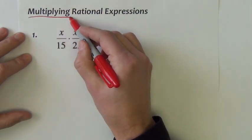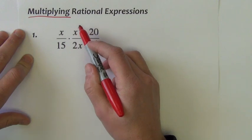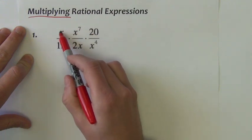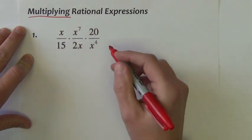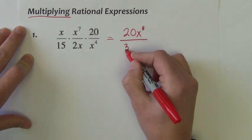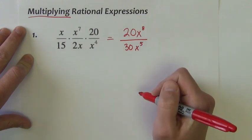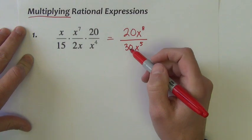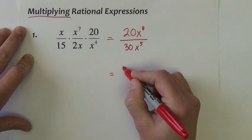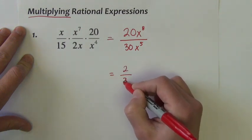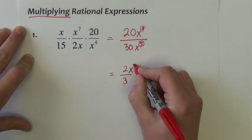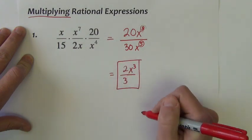Now, how about multiplying rational expressions — multiplying fractions? When you multiply fractions, the rule is you multiply everything on top together and multiply everything on bottom together. This gives us 20x to the 8th divided by 30x to the 5th. Then it's just an exercise in reducing the fraction: 20 divided by 30 reduces to 2 thirds, and subtracting the exponents on x gives 2x to the third divided by 3.